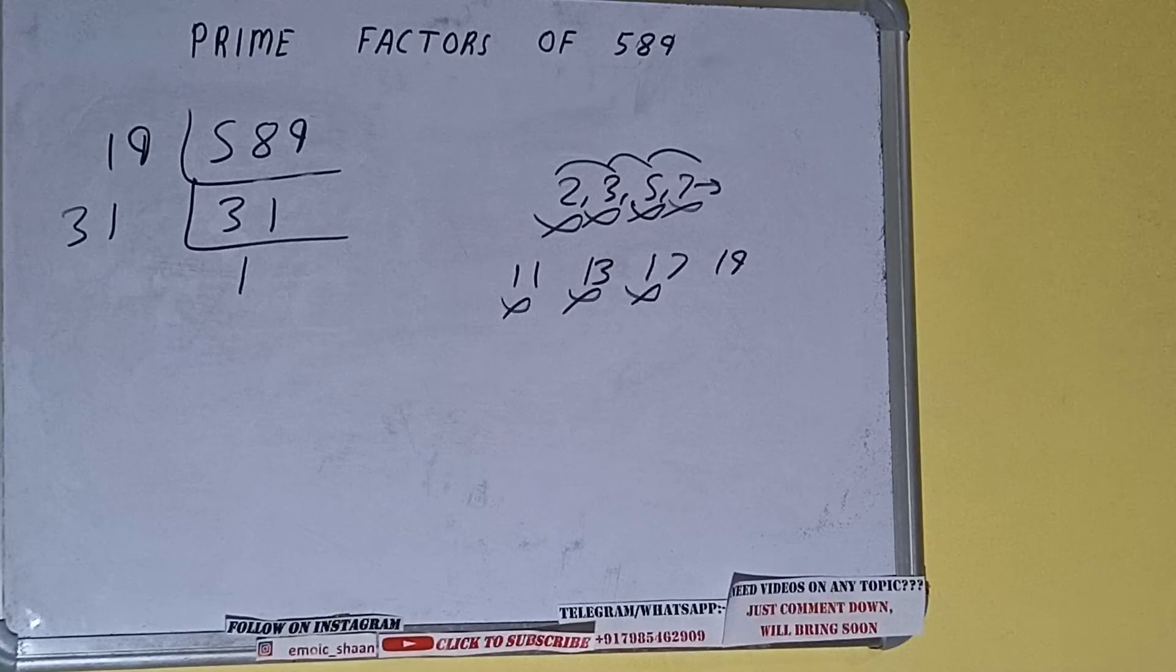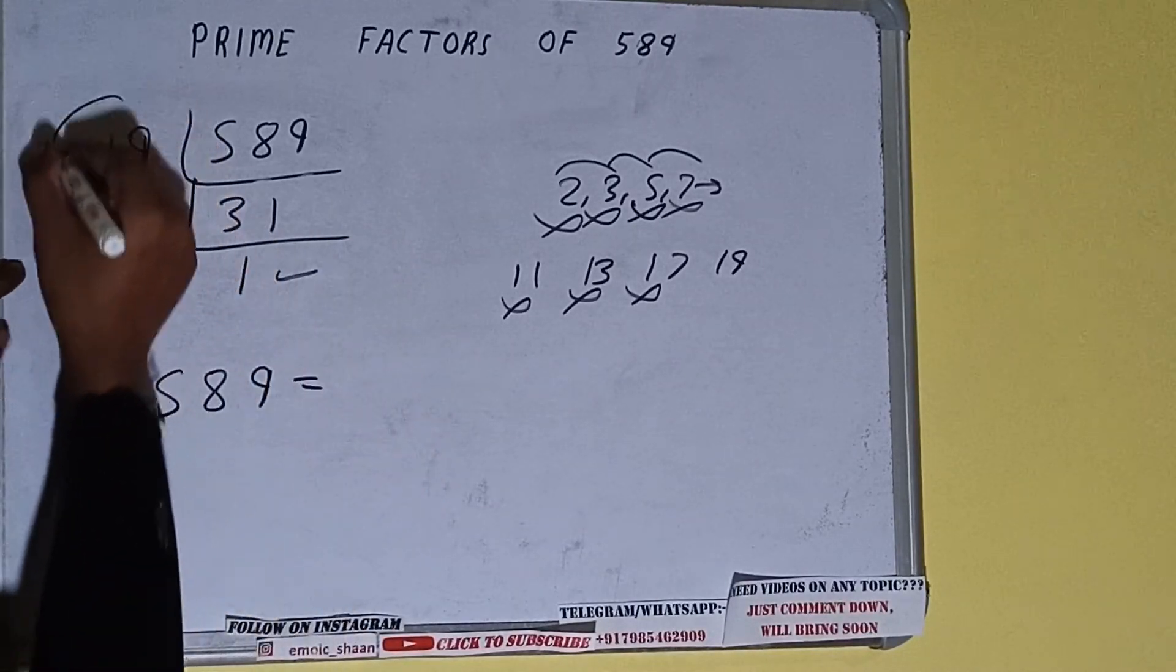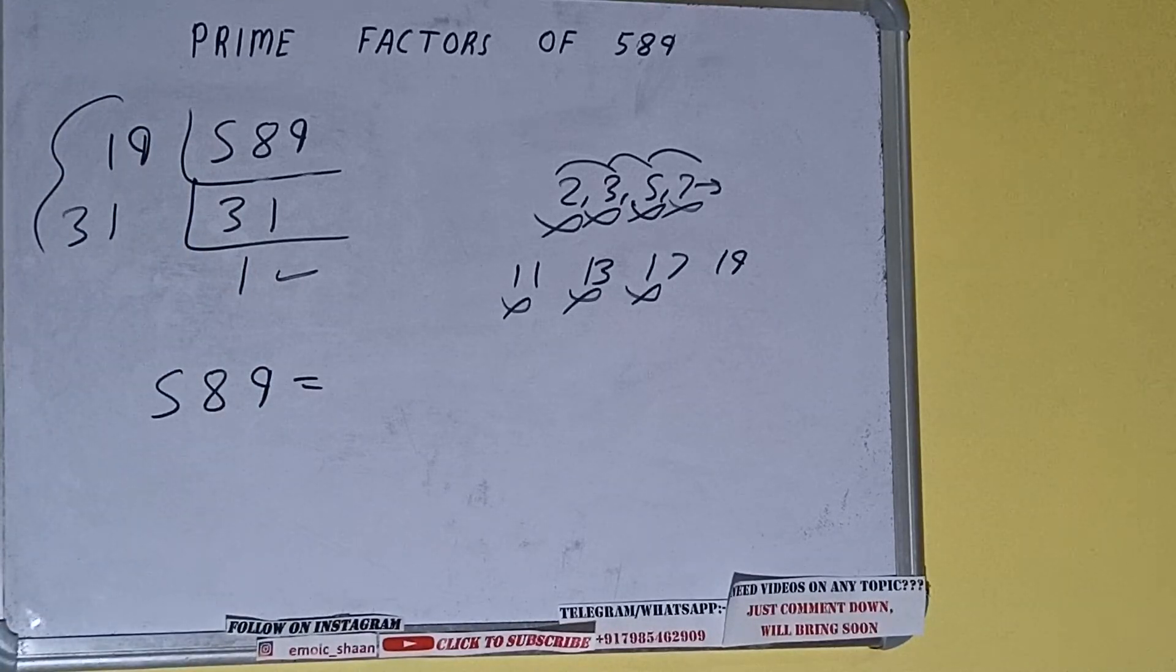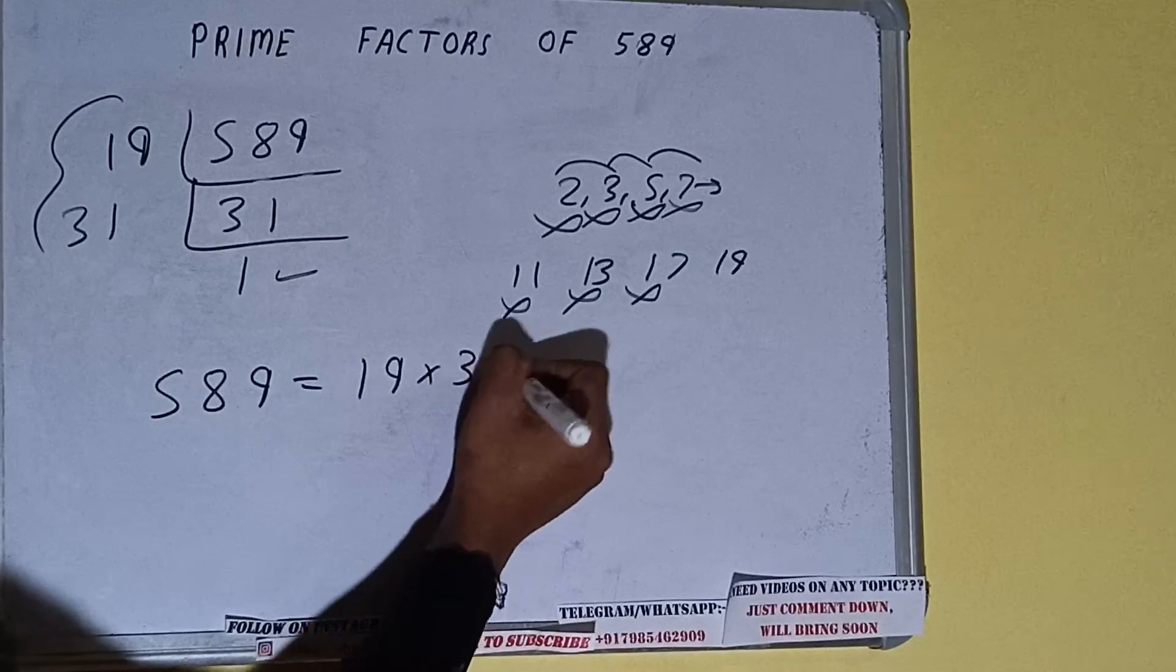And do one last thing, that is prime factors of 589 is equal to multiplying whatever we have on the left-hand side, that is 19 cross 31. That will be the answer.